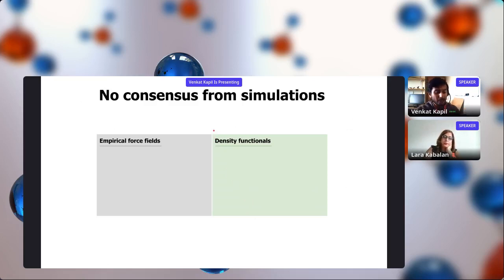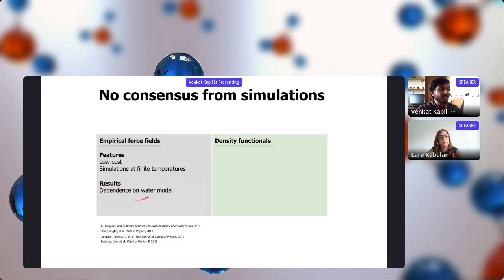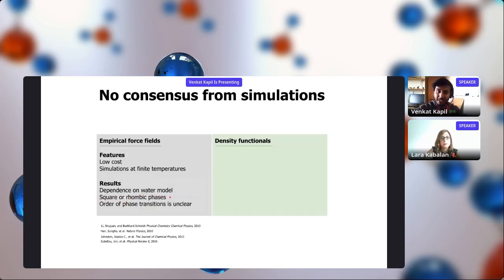From the theory side, there is a problem. Many studies have used empirical force fields because the computational cost is low, allowing finite-temperature molecular dynamics simulations. However, these force fields were primarily developed for bulk water, and most results depend heavily on the water model. For a single layer of water, these models generally predict either a square or rhombic phase at finite temperatures, without showing other phases. The order of phase transitions is also unclear — different force fields give different results, and melting temperatures have varied from around 300 to 600 K for just one layer of water.